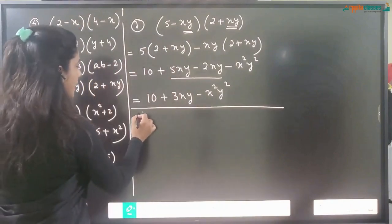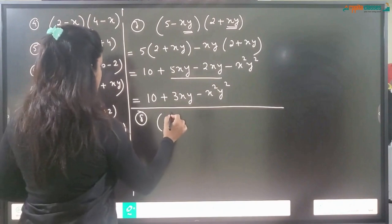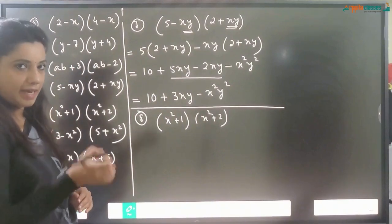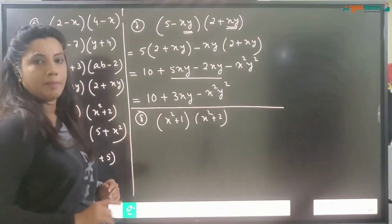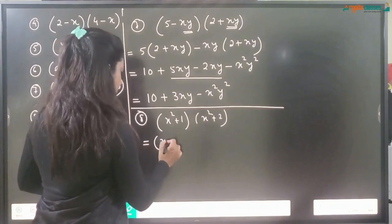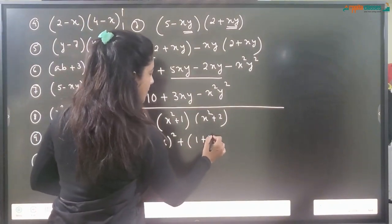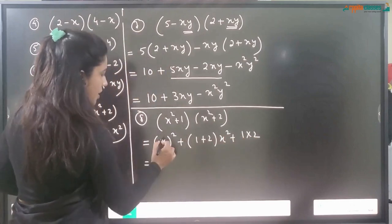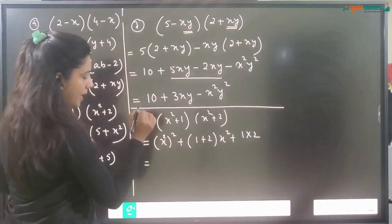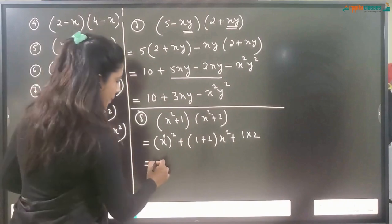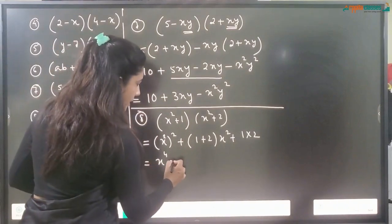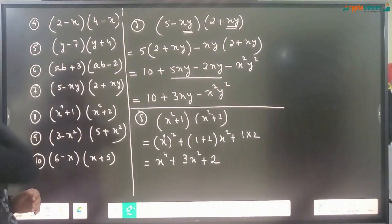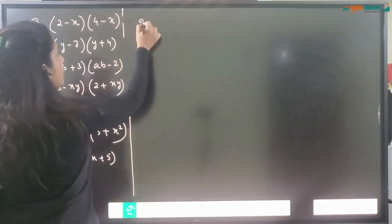Question number 8: (x² + 1)(x² + 2). Here x is x², a is 1, and b is 2. Using the formula: (x²)² + (1 + 2)(x²) + (1 × 2) = x⁴ + 3x² + 2. This is the answer for the 8th question.